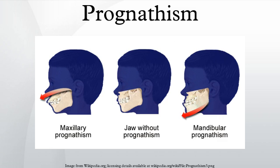Clinical determinants include soft tissue analysis, where the clinician assesses the nasolabial angle, the relationship of the soft tissue portion of the chin to the nose, and the relationship between the upper and lower lips. Also used is dental arch relationship assessment such as Angle's classification.